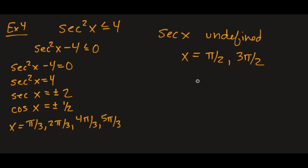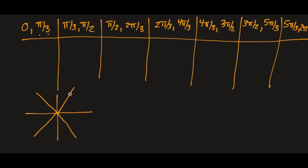Be careful because secant is undefined when cosine equals zero, which happens at pi over 2 and 3 pi over 2. Those also have to be endpoints. However, those undefined points don't change the sign in their intervals — they're just blips in the radar. So we're really dealing with four sign sections: 0 to pi over 3, pi over 3 to 2 pi over 3, 2 pi over 3 to 4 pi over 3, and 4 pi over 3 to 5 pi over 3, and 5 pi over 3 to 2 pi.